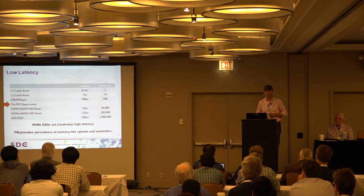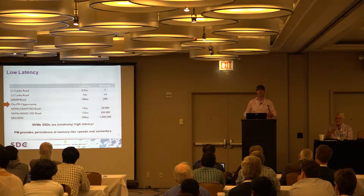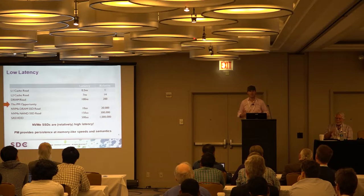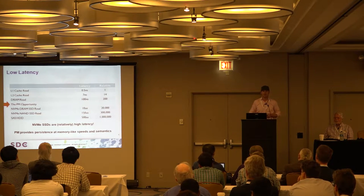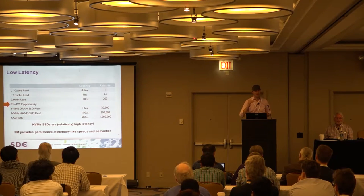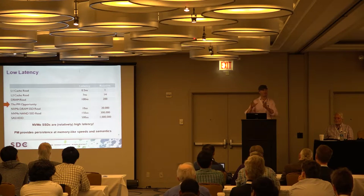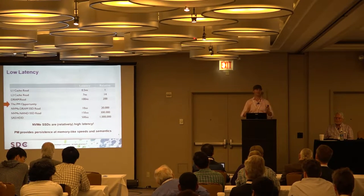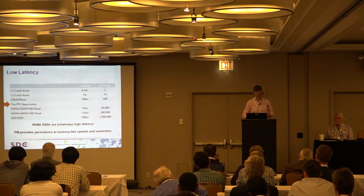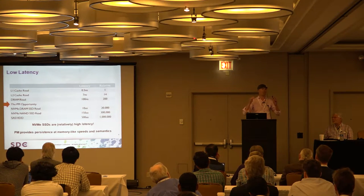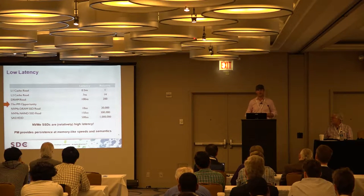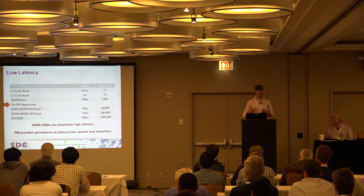L1 cache read is very quick — about half a nanosecond, which I call 'one' relatively. L2 cache is about seven, and so on. Interestingly, even DRAM relative to an L1 cache hit is pretty expensive. Sometimes your DRAM is going to do better than 100 nanoseconds, sometimes worse — there's a lot happening in the integrated memory controller, and there's a quality of service issue that hits you all the way through the stack. And then we have an absolutely massive jump.